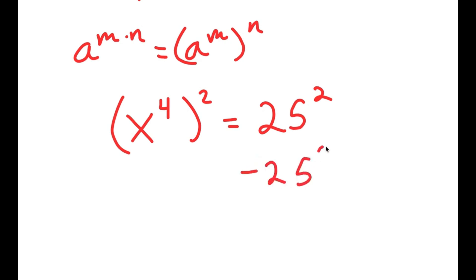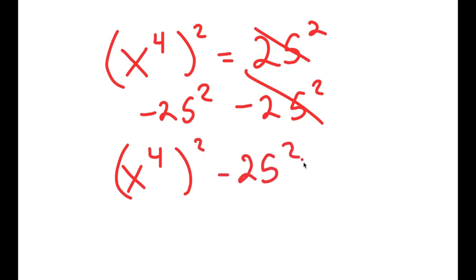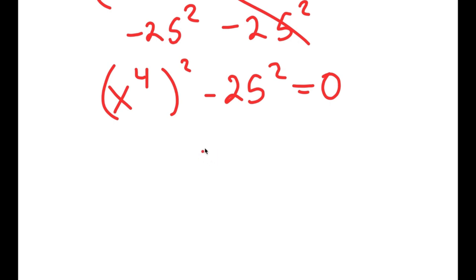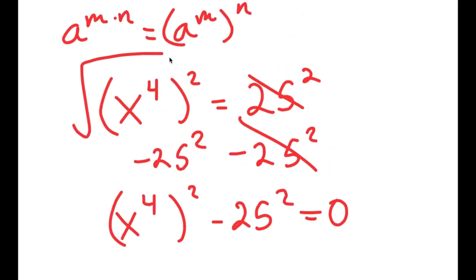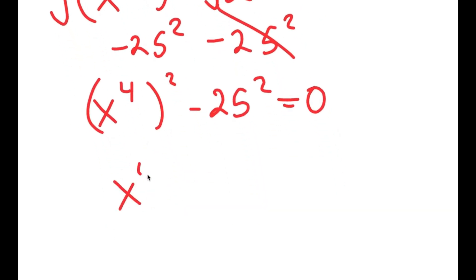Now I'm going to subtract 25 squared on both sides. These two cancel out, and I get x to the power of 4 to the power of 2 minus 25 to the power of 2 is equal to 0. I'm actually going to take the square root on both sides so I can cancel these twos out. So I get x to the power of 4 minus 25 is equal to 0.